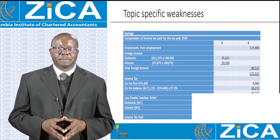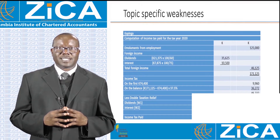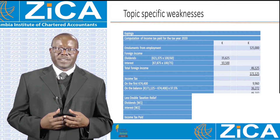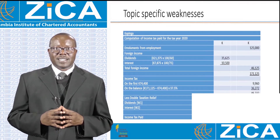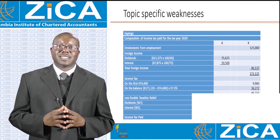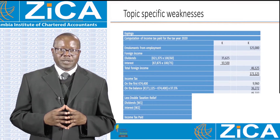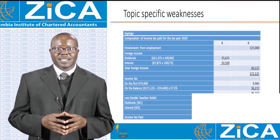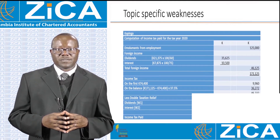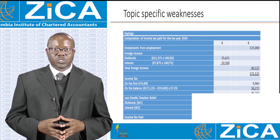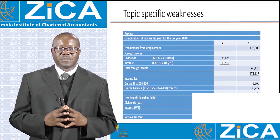Next, we have foreign interest. The amount received of 7,875 kwacha is net of foreign withholding tax at 25%. This is grossed up by multiplying by 100 divided by 75, producing 10,500 kwacha. The two amounts of foreign income add up to 46,125 kwacha. Adding this to the emoluments produces total income chargeable to income tax of 171,125 kwacha.